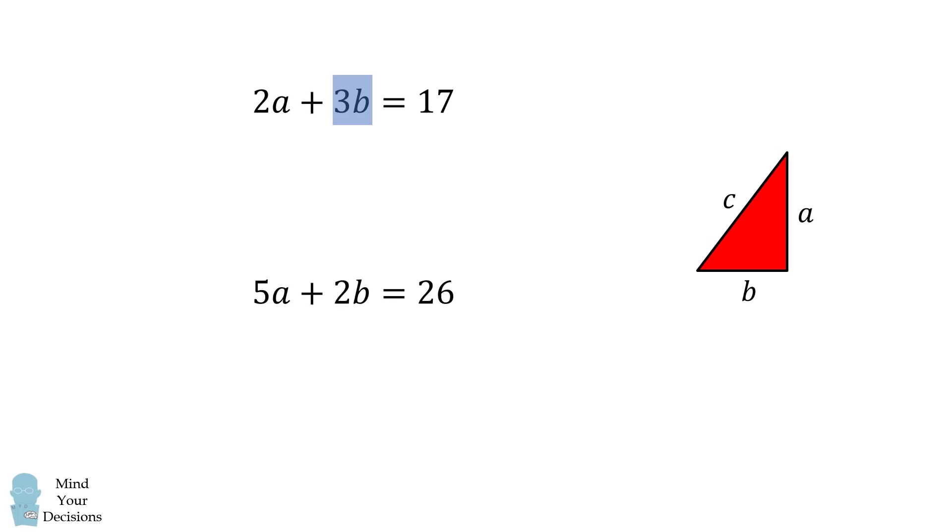To do that, we'll eliminate the b variable. We'll multiply the first equation by 2, which will give us 4a plus 6b is equal to 34. And we'll multiply the second equation by 3. This gives 15a plus 6b is equal to 78.